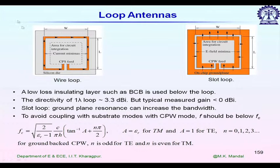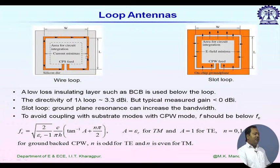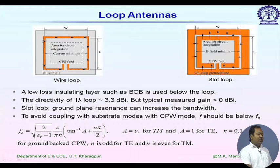We are expecting radiation in the broadside direction. Consider a wire loop antenna whose length is one lambda at the operating frequency. Typical gain from a one-lambda loop is more than 3 dBi, but when fabricated on silicon, due to increased losses, the realized gain is always less than 0 dB. In this example, the loop is fabricated on BCB material placed on silicon, which improves the gain or antenna efficiency to some extent.